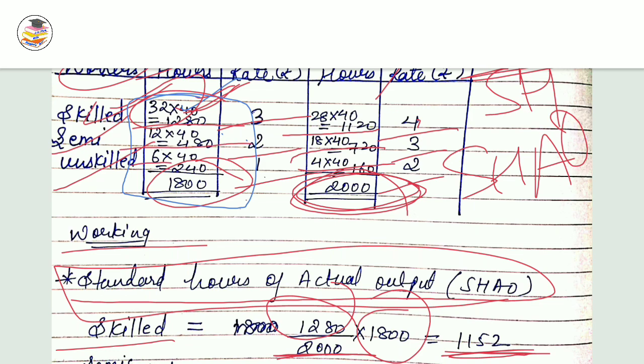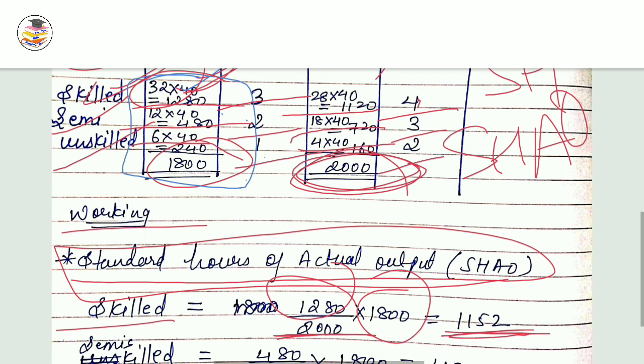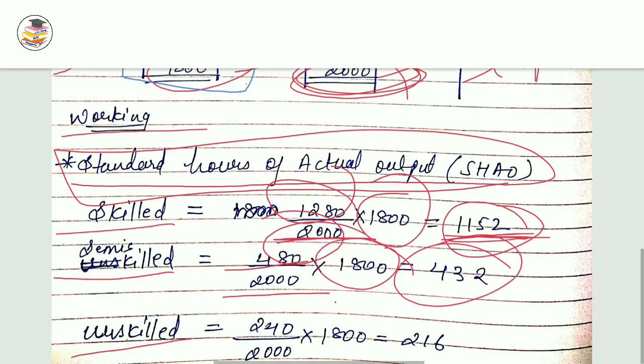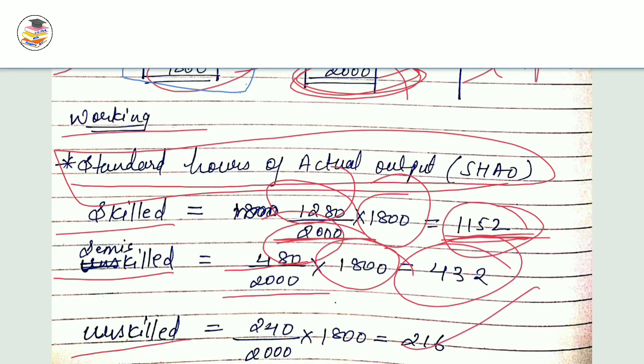Direct labor cost variance is L5 minus L1. L5 means SR into SHAO, and L1 is AR into AH. For skilled, semi-skilled, and unskilled, put the values and sum up. The result is adverse.